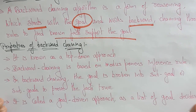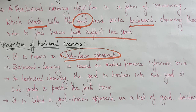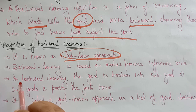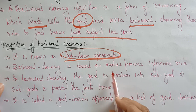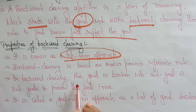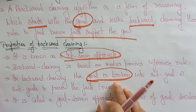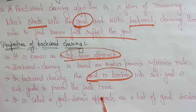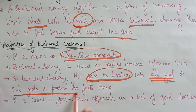Now let's see the properties of backward chaining. It is also known as the top-down approach, whereas forward chaining is the bottom-up approach. Backward chaining is based on the modus ponens inference rules. In backward chaining, the goal is broken into sub-goals — with the help of the goal we reach the initial state, so the goal is broken into sub-goals to prove the facts true.